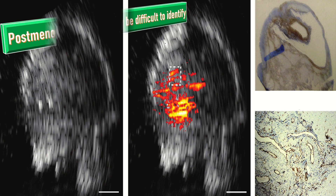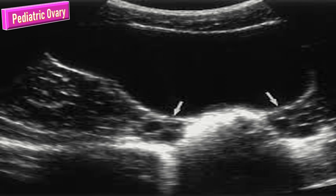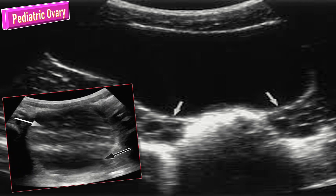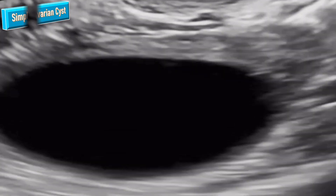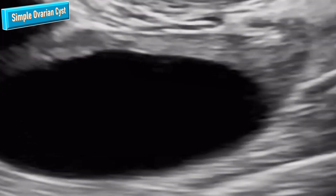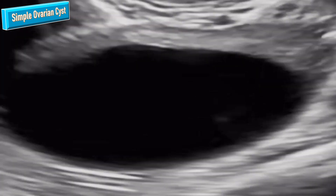The postmenopausal ovary can be difficult to identify because of the absence of follicles and reduced size. The pediatric ovary will have multiple small follicles.